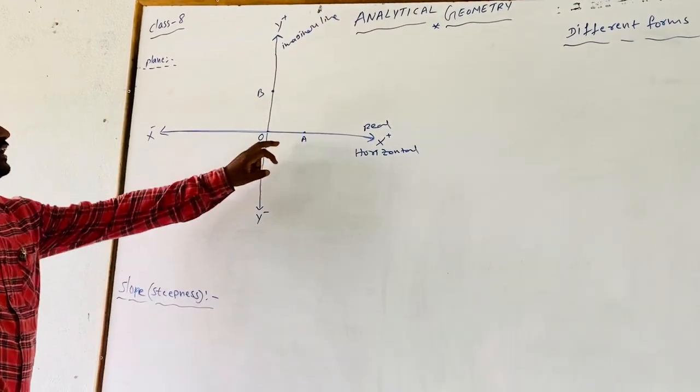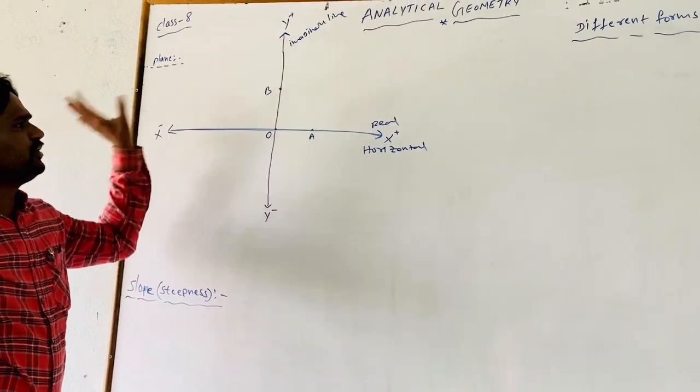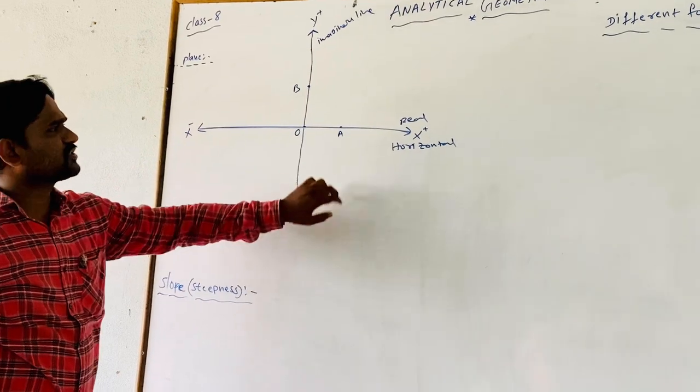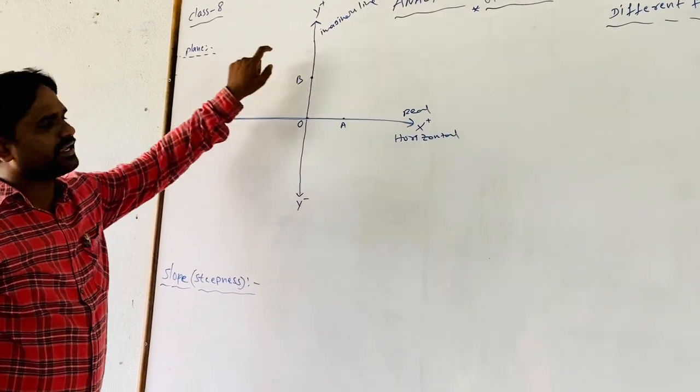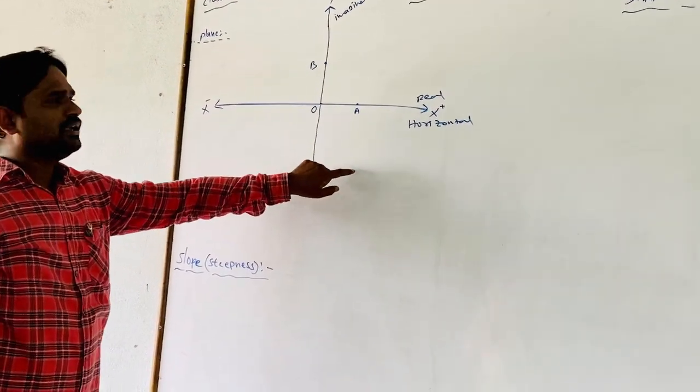With respect to the x and y axes, we divide the plane into four quadrants: the first quadrant, the second quadrant, the third quadrant, and the fourth quadrant.